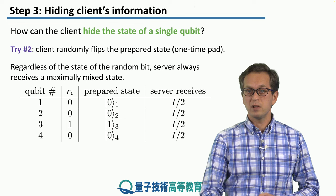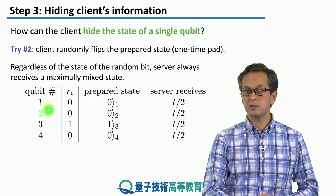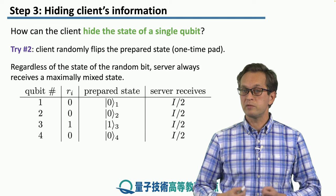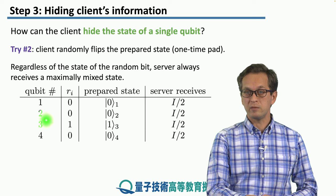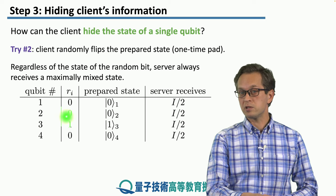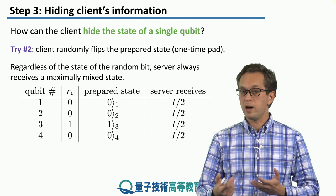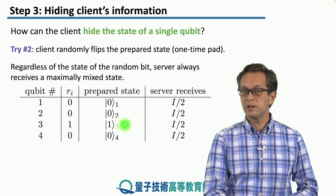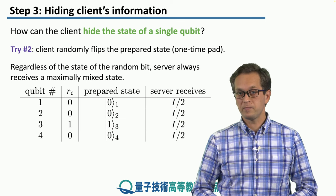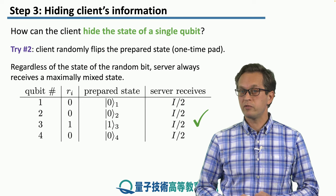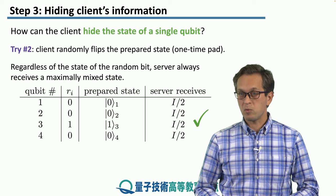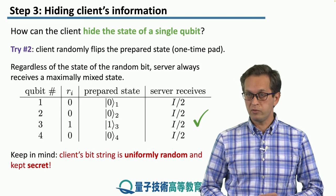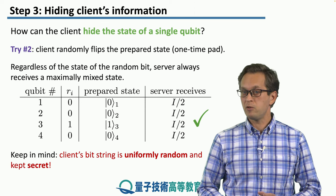Here's a sequence of such events. When the client generates the first qubit, it generates the first random bit — let's say it's 0, so the prepared state on the client side is |0⟩. It sends it to the server, but what the server receives is a maximally mixed state. The second qubit: r_2 is equal to 0, so the prepared state is also |0⟩, but the server again receives a maximally mixed state. For the third qubit, even when r_i equals 1 and the prepared state is |1⟩, the server still receives a maximally mixed state. Keep in mind that the client's bit string must be uniformly random and must be kept secret from the server — otherwise this scheme will not work.